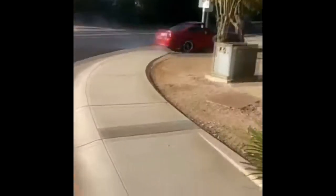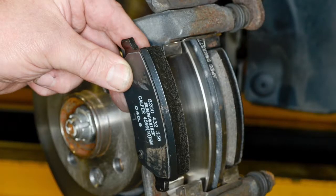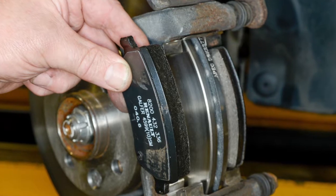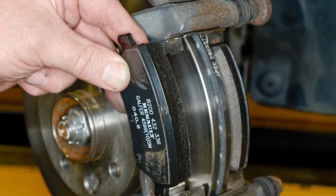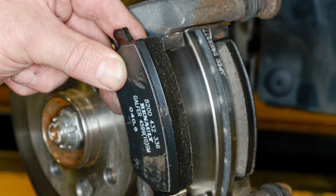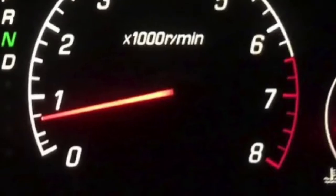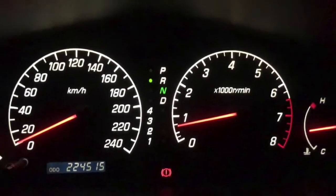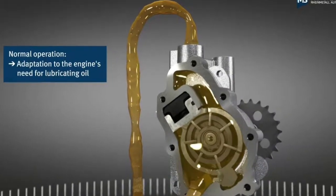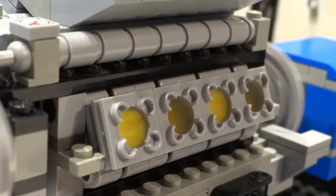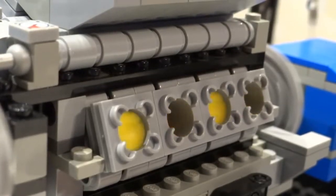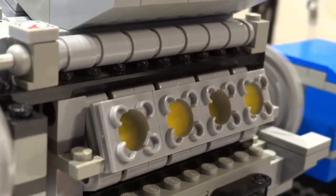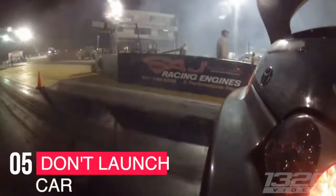This is a brake pad. The brake pad is full. Neutral is controlled by the RPM. This is the oil pump. This is the engine. The engine is launched. Later, the bike has been launched.